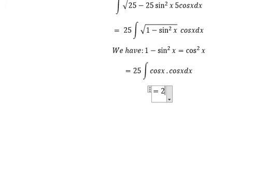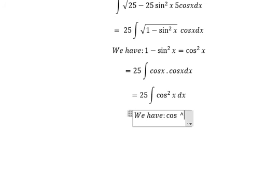And we change this one, we have cosine x to the power of 2 x. And now we have 25 cosine x to the power of 2 dx. In here we have the formula: cosine x to the power of 2.